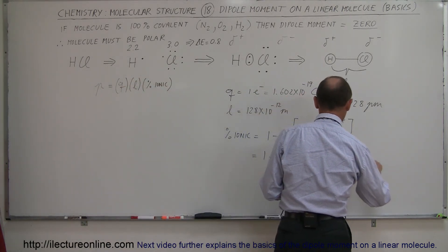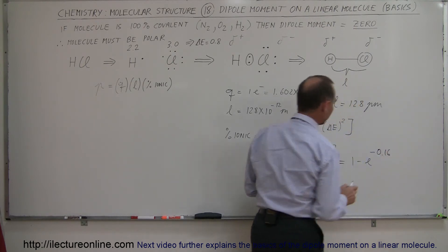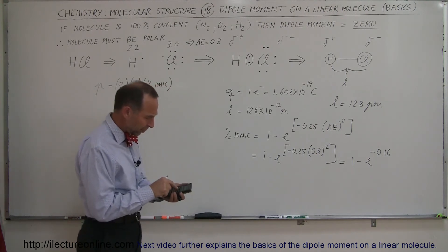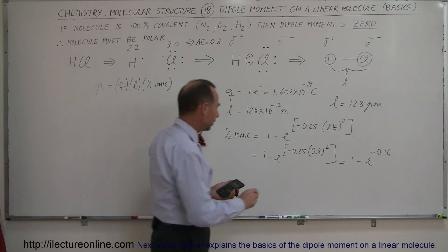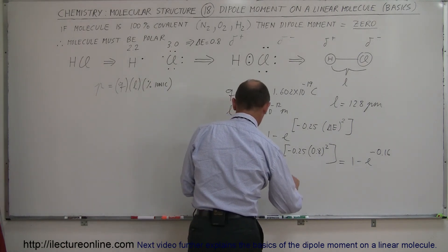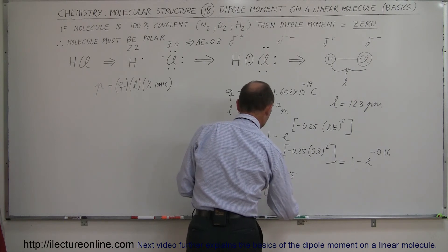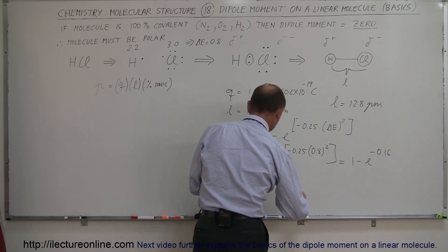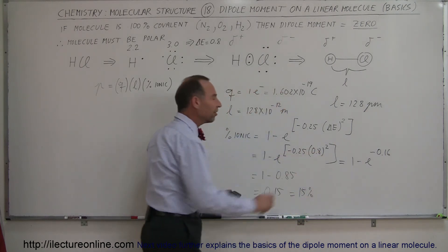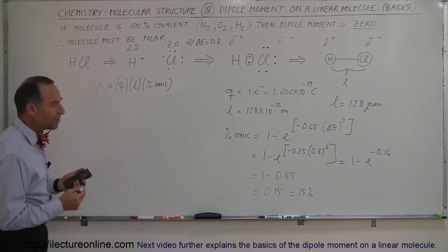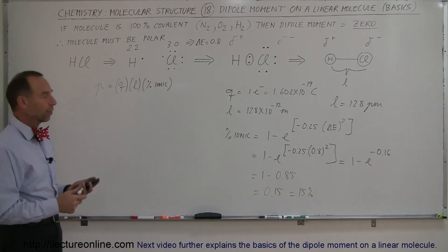This should now be equal to 1 minus E to the minus 0.16 power. So get your E button on your calculator, raise it to the minus 0.16 power. So that should give you 1 minus 0.85. So that's equal to 0.15 or 15%. So this tells us that HCl is about 15% ionic and about 85% covalent. That's kind of the way you want to look at it.